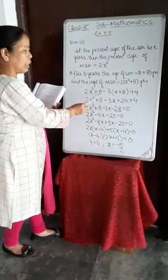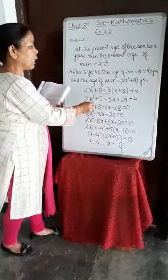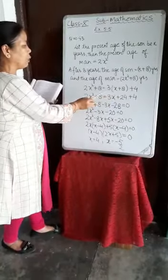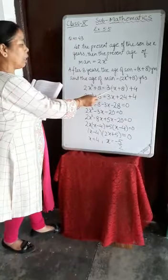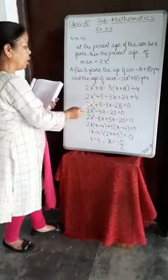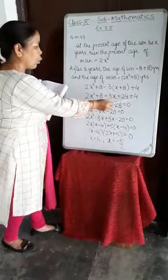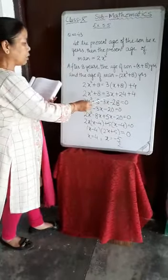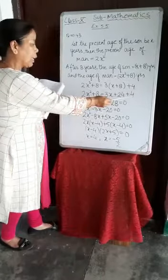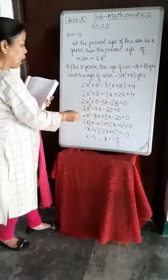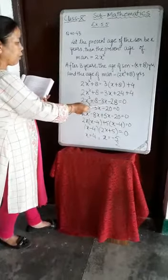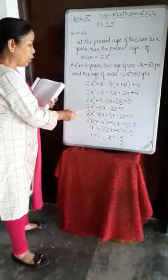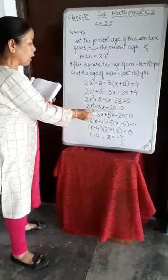After 8 years, the age of son equals X plus 8 and the age of man will be 2X squared plus 8 years. According to the question, the man's age is 4 more than 3 times the age of his son. So: 2X squared plus 8 equals 3(X plus 8) plus 4. Opening the bracket, 3 into X is 3X and 3 into 8 is 24. So 2X squared plus 8 equals 3X plus 24 plus 4. Bringing all terms to the left side: 2X squared minus 3X plus 8 minus 28 equals 0, giving 2X squared minus 3X minus 20 equals 0.